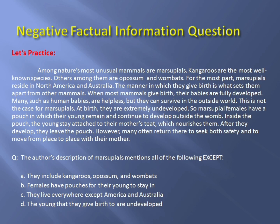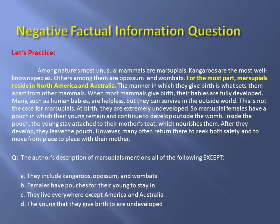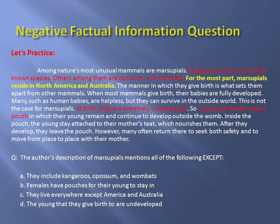If you chose C, then you are correct. Let us find out why. Answer choice C is the only statement in the passage that is not mentioned. The statement in choice C is actually the exact opposite of what appears in the passage. Look at this part again — it reads: 'Marsupials live in America and Australia,' while answer choice C claims that they live everywhere except those two places. This makes letter C an incorrect statement. Choices A, B, and D are all correct statements in the passage, so they should not be chosen.